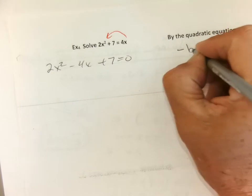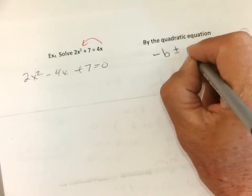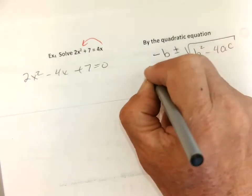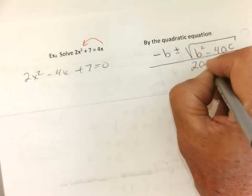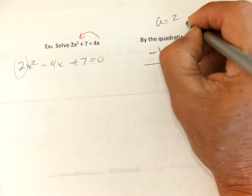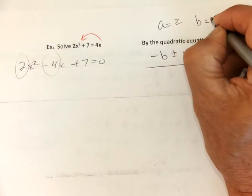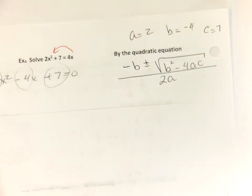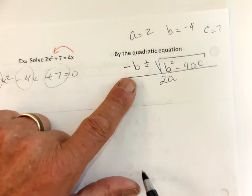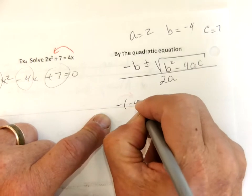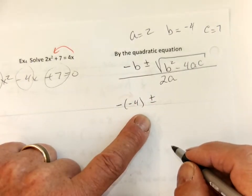We're going to use our negative b plus or minus square root b squared minus 4 times a times c all over 2a. OK, a is 2, b is negative 4, and c is 7. So all we do is just plug and chug. We're just plugging the numbers. We're going to chug along and get an answer.